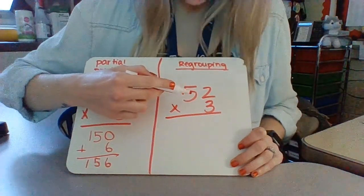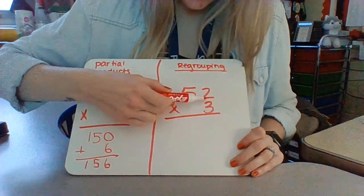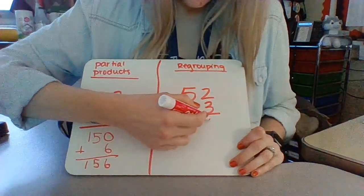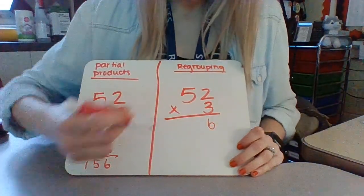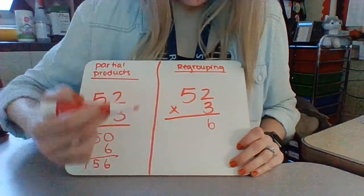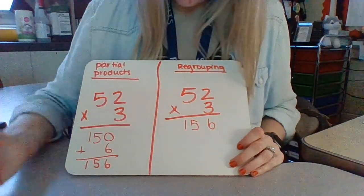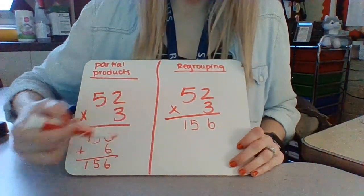Now we're going to do regrouping. 3 times 2 is 6. 3 times 5 is 15. We got the same answer.